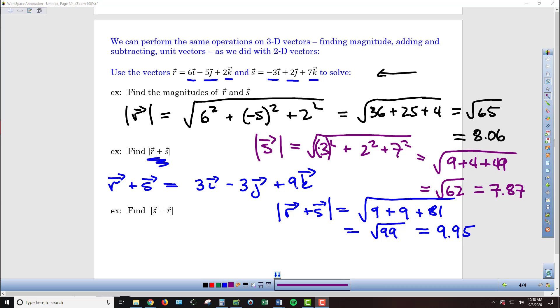To close things out, we've got the magnitude of S minus R. Now we're just going to subtract those two vectors. To get S minus R, we're subtracting in this direction. So negative 3 minus 6 gives us negative 9i, 2 minus negative 5 gives us plus 7j, and 7 minus 2 gives us plus 5k.